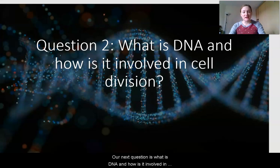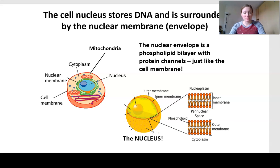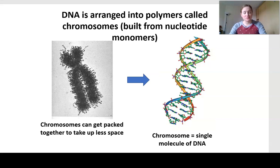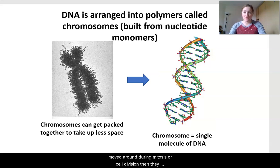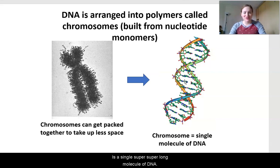What is DNA and how is it involved in cell division? Your DNA is the information that makes you you. It's stored in the nucleus, which is surrounded by a phospholipid bilayer with protein channels just like the cell membrane, so your DNA is very well protected. DNA is arranged in a polymer called a chromosome, and the monomer of that polymer is called a nucleotide. Chromosomes get packaged up to take up less space, making it easier to move them during mitosis. Each chromosome is a single super long molecule of DNA.